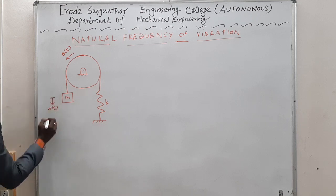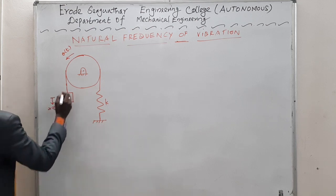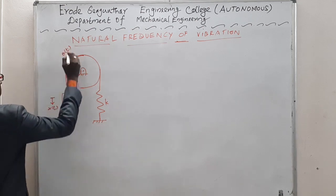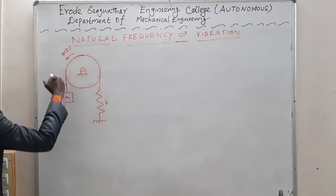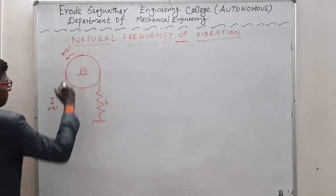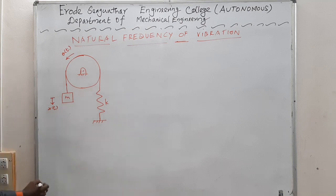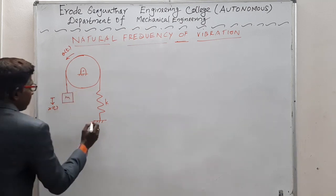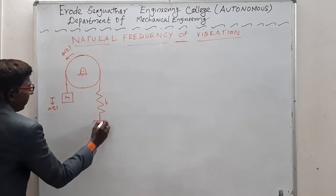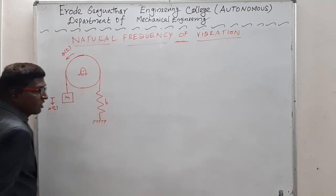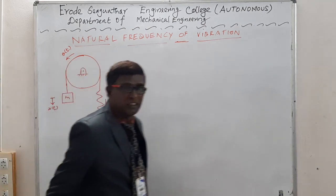x(t) represents the linear displacement of the mass, and θ(t) represents the angular displacement of the pulley. For such a system, how do we find the natural frequency of vibration?